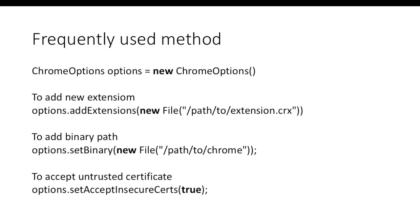First, you need to create an object of ChromeOptions, and once you create that object you can use all the available methods. It has some default methods like addExtension — whenever you want to start a Chrome browser with some plugins. By default when you start ChromeDriver you will not find any history, cookies, or extensions. But if you want to load your ChromeDriver with a certain extension, you can do so using addExtension. Every extension you use has the file extension .crx, so once you download it you can use it to load with your browser.